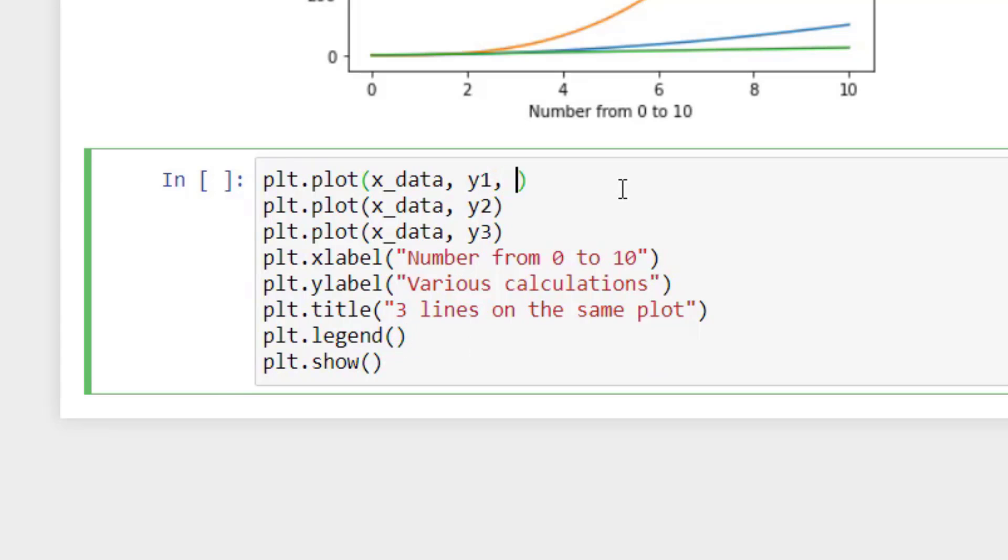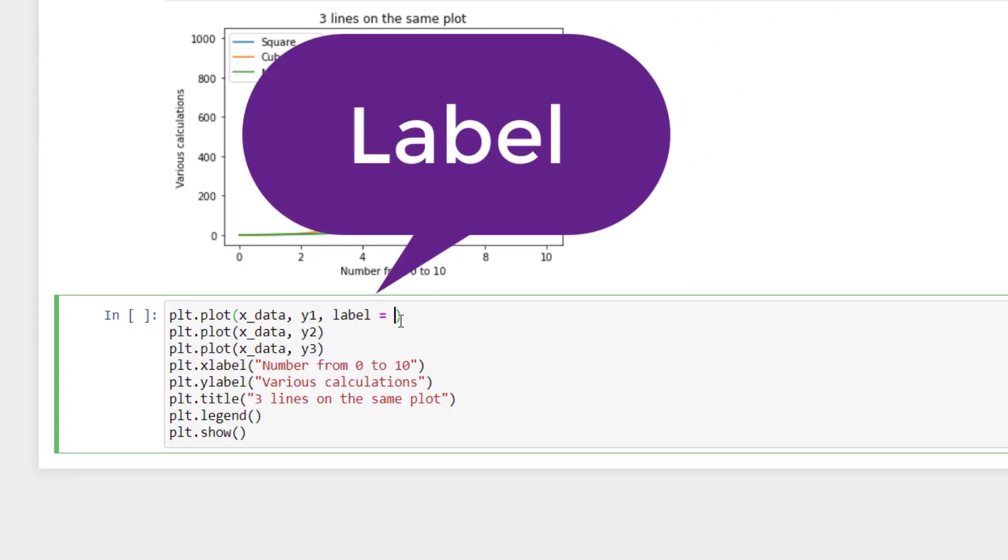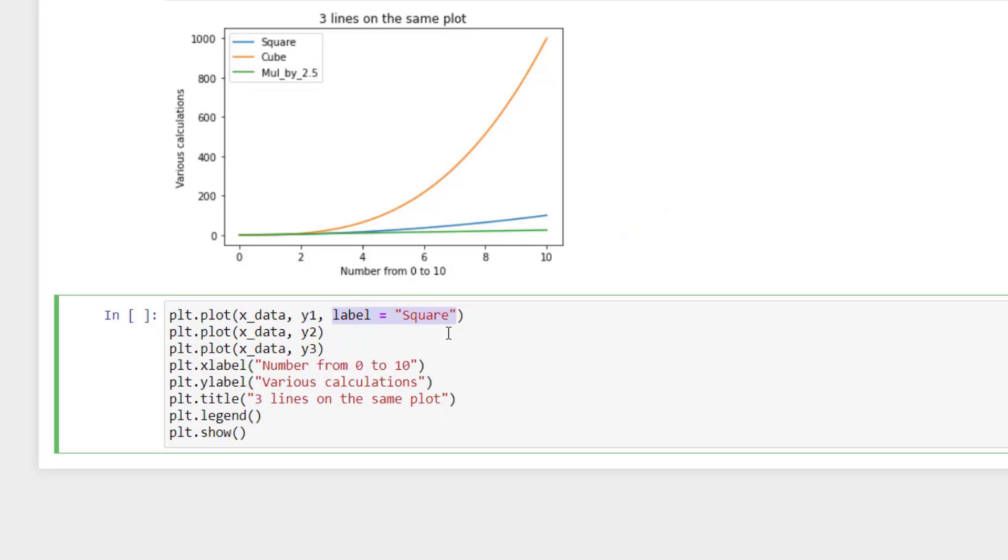And here I will put label equal to square, same thing I will copy it here, paste, I'm sorry, paste it and then we will say cube and again I will paste it here and say, I will say multiply by 2.5, oh sorry, 2.5.